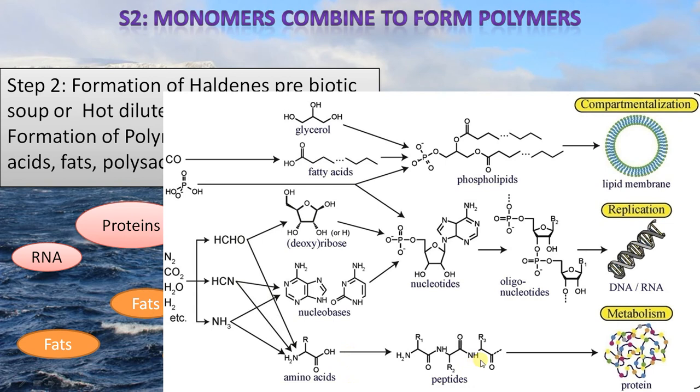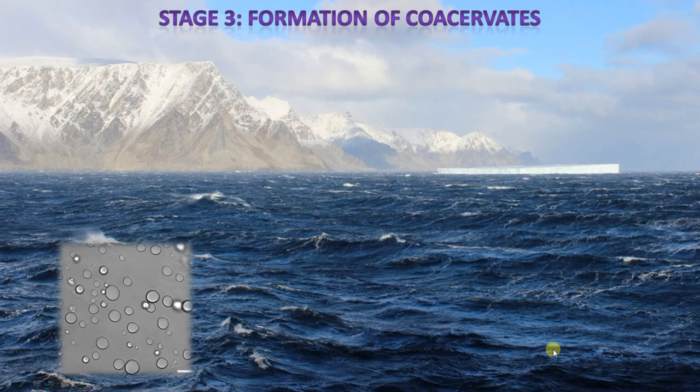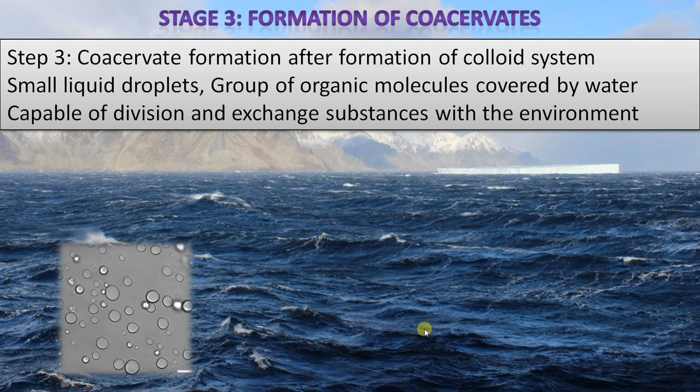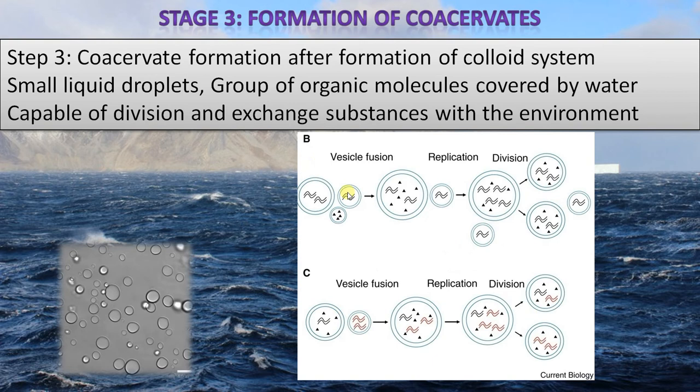Step three is the formation of coacervates. Coacervates are formed from a colloidal system — small liquid droplets containing organic molecules covered by a water membrane. They are capable of division and can exchange substances with the outside environment. These biomolecules inside the water membrane were capable of replication and division. Over time, more biomolecules accumulated inside this membrane, becoming increasingly complex.